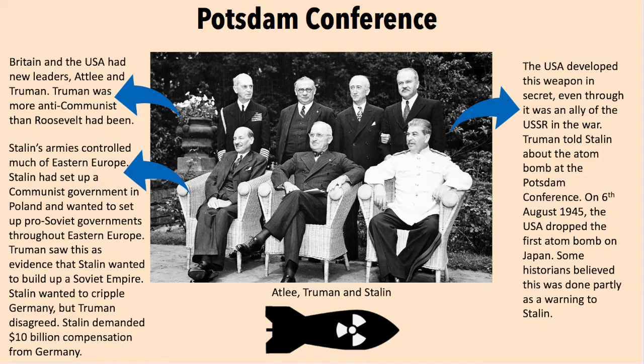Stalin demanded $10 billion compensation from Germany. The USA developed an atom bomb in secret, even though it was an ally of the USSR in the war, which deepened the mistrust between the two sides. Truman told Stalin about the atom bomb at the Potsdam Conference. On the 6th of August 1945, the USA dropped the first atom bomb on Japan. Some historians believe that this was done partly as a warning towards Stalin.